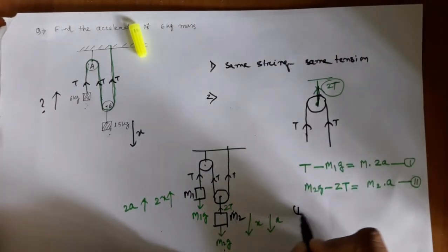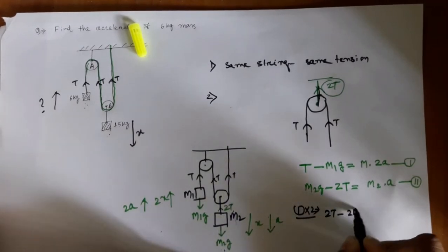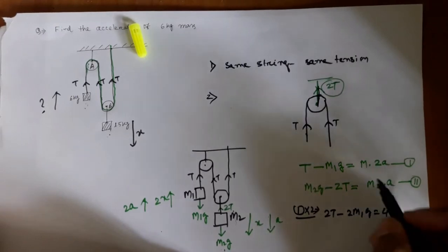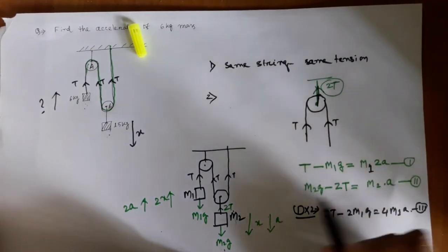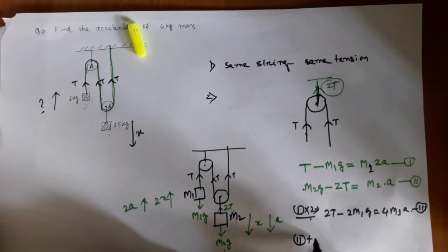To solve the two equations, we have to eliminate 2T. So we are multiplying equation 1 by 2. We are getting—oh, I made a mistake—it should be: 2T minus 2M1·g equals 4M1·a. This is equation number 3.